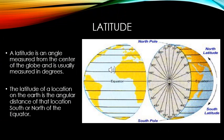Latitude is an angle measured from the center of the globe and is usually measured in degrees. The latitude of a location on the earth or on the globe is the angular distance of that location to the south or north of the equator.